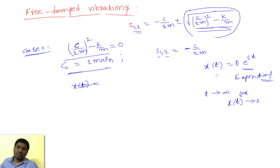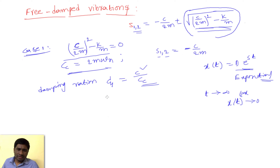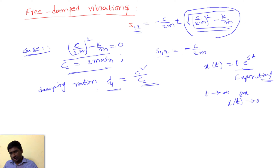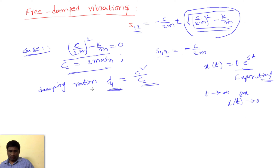I define one more term: the damping ratio ξ = c / cc, the ratio of damping coefficient to critical damping coefficient. This is non-dimensional because both have the same units. Defining a non-dimensional form is very useful because it reduces the number of variables in an equation and makes comparison between systems easier.